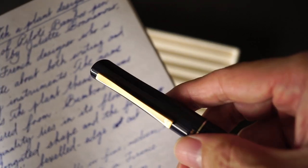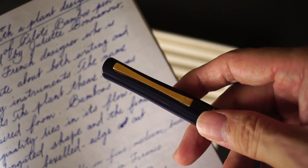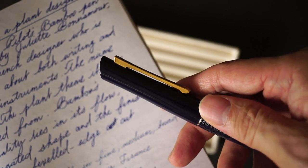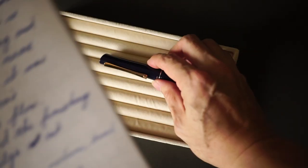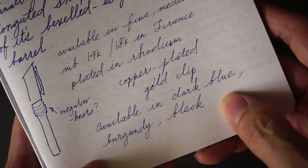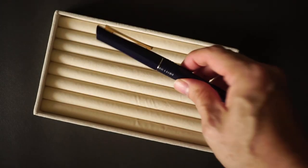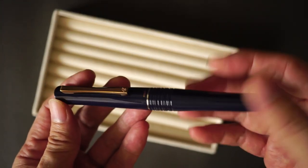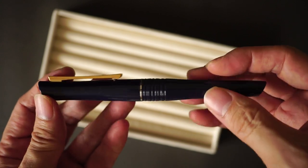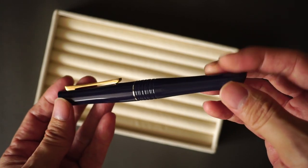The clip, I'm not sure whether you can make it out, is actually copper plated, and it gives it a rose gold colour. Last but not least, the pen was available in dark blue, burgundy, and black. Mine happens to be the dark blue model. In certain light, it actually looks purplish. I happen to think it's a very attractive colour.